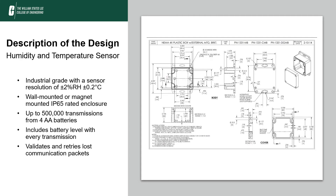The humidity and temperature sensor is industrial grade and can be wall mounted or magnetically mounted like the other sensor. It can transmit up to 500,000 times on just four AA batteries. It also includes the battery level with every transmission and validates and retries lost communication packets.